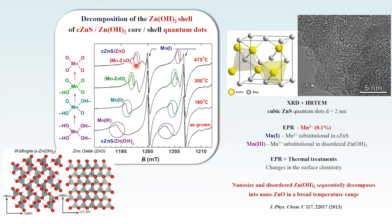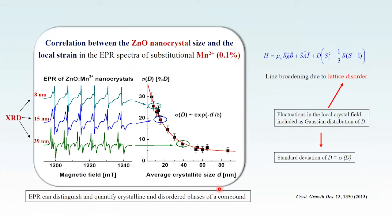By monitoring the hyperfine splitting, this decomposition takes place over a broader temperature range than in the bulk — another example of size effects in zinc oxide nanocrystals. The shape of the hyperfine line changes with size. We made a correlation between the nanosize as measured by XRD and the strain at the manganese environment, measured by the standard deviation of the D spectral parameter. In this way, by EPR we can distinguish and quantify crystalline and disordered phases containing manganese ions.